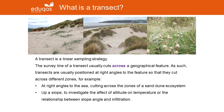A classic example is a transect through a sand dune ecosystem, as illustrated on this slide — starting on the left with the embryo dunes, working through the yellow dunes and then into the fixed dunes. But of course you could use transects in a variety of different circumstances, both in physical and human geography.